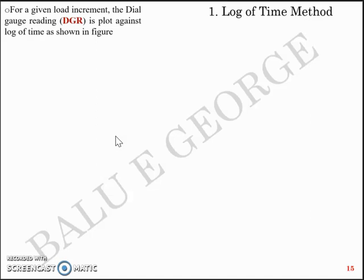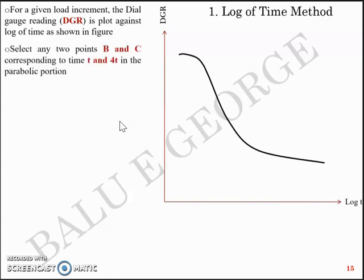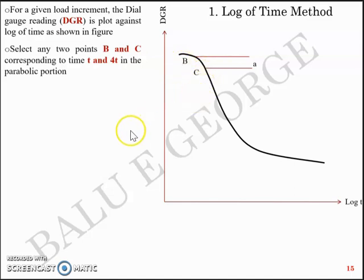The second method to determine cv is the log of time method. For a given load increment, the dial gauge reading is plotted against the logarithm of time. You'll have dial gauge reading on the y-axis and log of time on the x-axis. Next, select any two points B and C corresponding to a time t and 4t — at time t the point on the curve is B, and C corresponds to time 4t — and these fall in the parabolic portion.